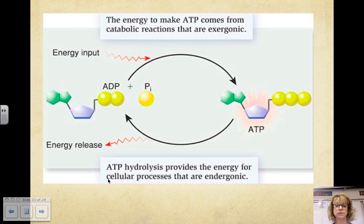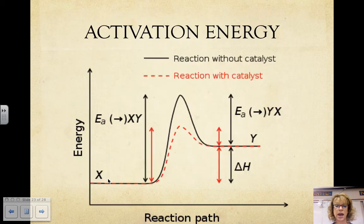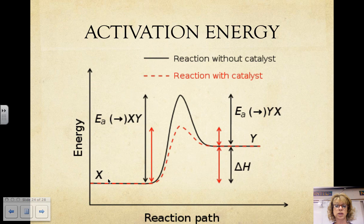All the ATP in a cell is used and regenerated every minute. ATP breaks down very easily, and an energy barrier prevents it from breaking down spontaneously. The energy barrier is called activation energy — that is the amount of energy the reactants must absorb to start a chemical reaction. In ATP, the activation energy is the amount of energy needed to break the phosphate group off.